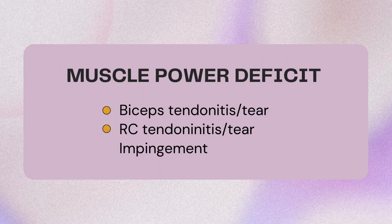So what is a muscle power deficit? That is when you have a dysfunction with a contractile structure and it will lead to weakness and pathomechanics due to overuse or trauma. The muscles involved include the biceps and rotator cuff muscles like the supraspinatus, infraspinatus, teres minor, and the subscapularis.